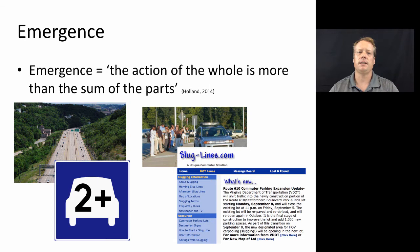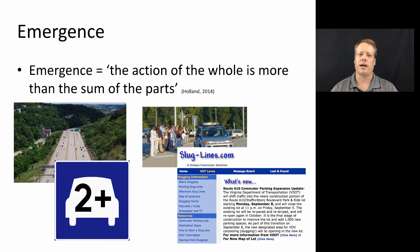Emergence is the idea that the action of the whole is more than the sum of the parts — that's from John Holland's 2014 book on complexity. Let's stay with the notion of traffic for a while, because it's an interesting notion where there's a lot of emergent phenomena that occur.